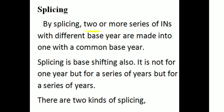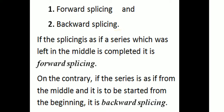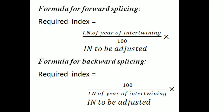Then, splicing. By splicing, two or more series of index numbers with different base years are made into one with a common base year. Splicing is like base shifting, but not for one year — it applies to a series of years. There are two kinds: forward splicing and backward splicing. Formula for forward splicing: required index number equals index number of intervening year divided by 100, into index number to be adjusted. Formula for backward splicing: required index number equals 100 divided by index number of intervening year, into index number to be adjusted.